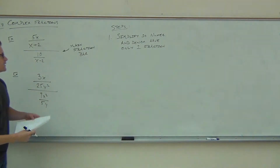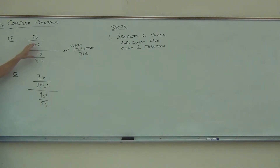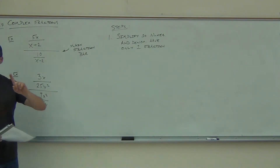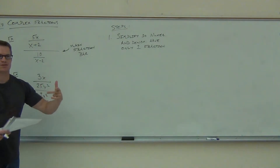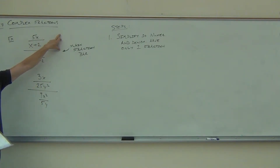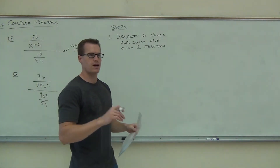So we've done that already. This already has just one fraction over one fraction. Look at the top here — this is still just one fraction, even though it has two terms in the minor denominator. This is still just one fraction over one fraction, and this would satisfy step one. How it wouldn't satisfy step one is if you had something like plus or minus something over here — then that would not be one fraction over one fraction.